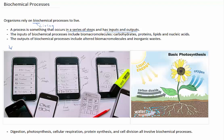For example, photosynthesis is an example of a biochemical process. The inputs of the process include carbon dioxide and water, and the outputs are oxygen — which in this case is considered an inorganic waste product — and glucose.